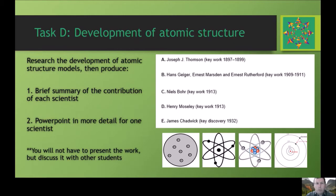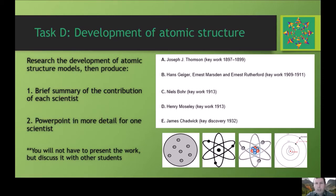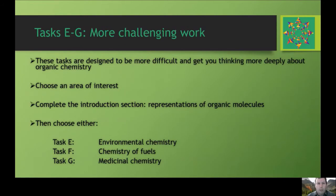Task D is to do with the development of atomic structure, which is where the A-level course will begin in the first week of term. We want you to look at the key scientists involved: Thomson, Geiger, Marsden and Rutherford, Bohr, Moseley, and Chadwick. Write a brief summary of each scientist's contribution — what they found out and what experiments they did. Then select one scientist or group and produce a PowerPoint going into their work in more detail. You won't have to present to the whole group, but you'll need to bring the research and be prepared to discuss it.